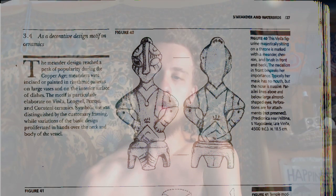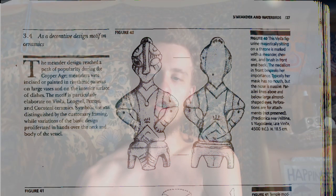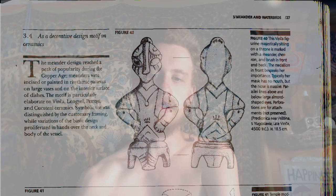Typically, her mask has no mouth, but the nose is massive — this is a typical Vinca figurine: no mouth, massive nose. Parallel lines above and below large almond-shaped eyes. Perforations are for attachments not preserved — so you could tie it to something.